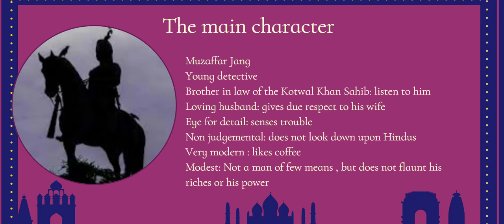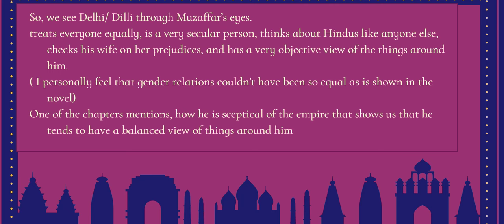We also get to know that Muzaffar Jung likes coffee, and he doesn't want to flaunt his money — he is not a man of few means but doesn't want to show off his power or riches. We see Delhi through his eyes; the city is referred to by its 17th century Mughal pronunciation. The Delhi here is essentially Old Delhi — the northern part of today's Delhi — with places like Jama Masjid and Chandni Chowk mentioned at various points in the novel.